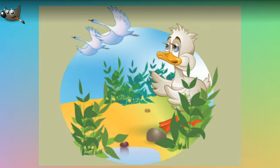They mounted so high, so high, and the ugly duckling felt quite strangely as it watched them. It turned round and round in the water like a wheel, stretched out its neck towards them, and uttered such a strange loud cry as frightened itself.